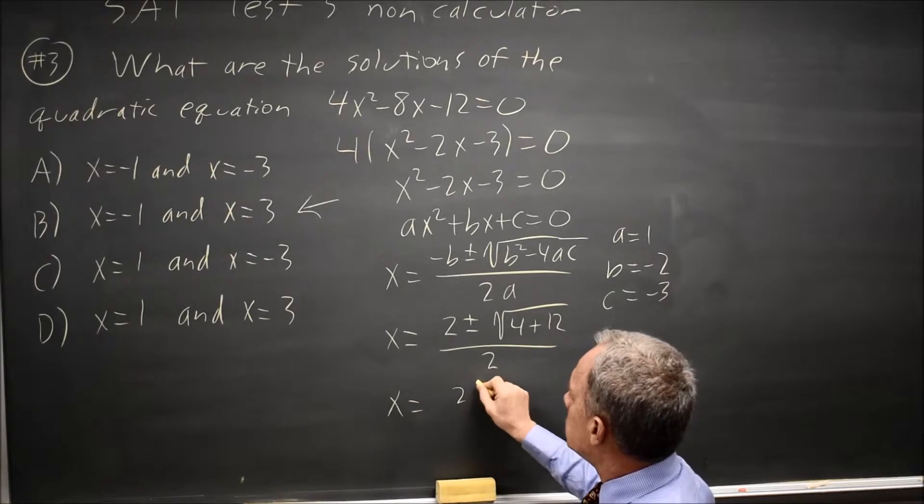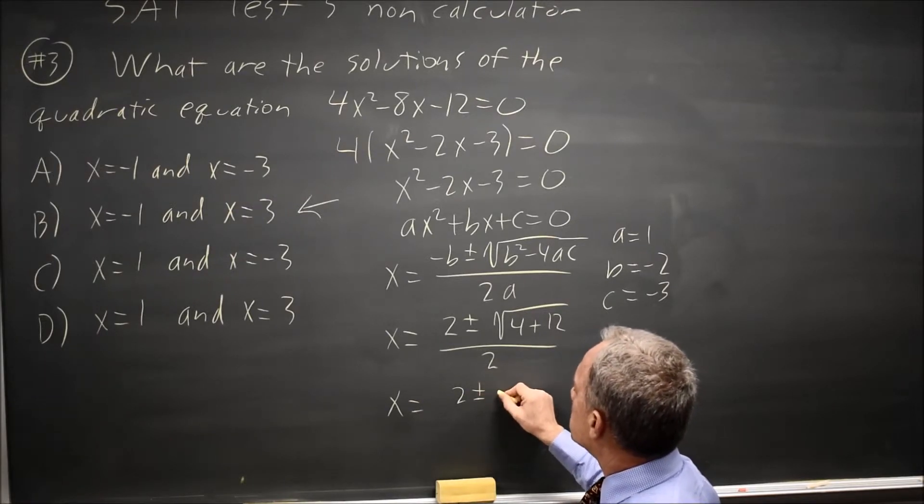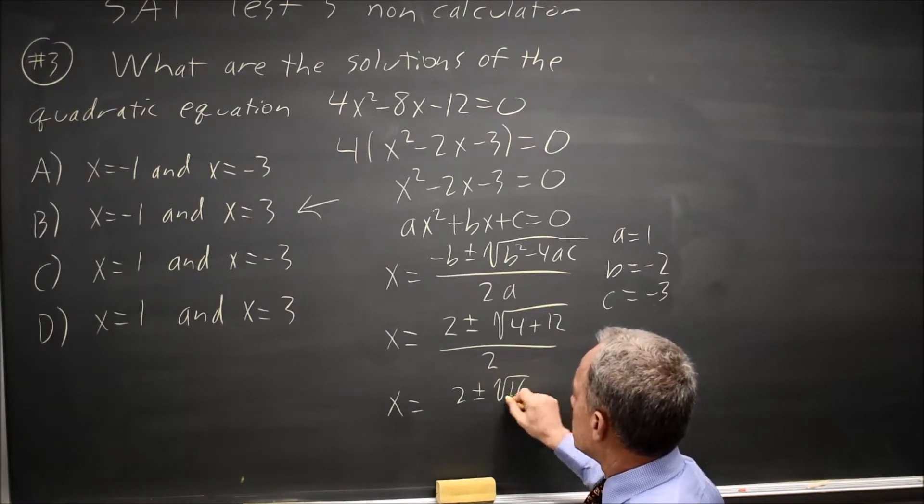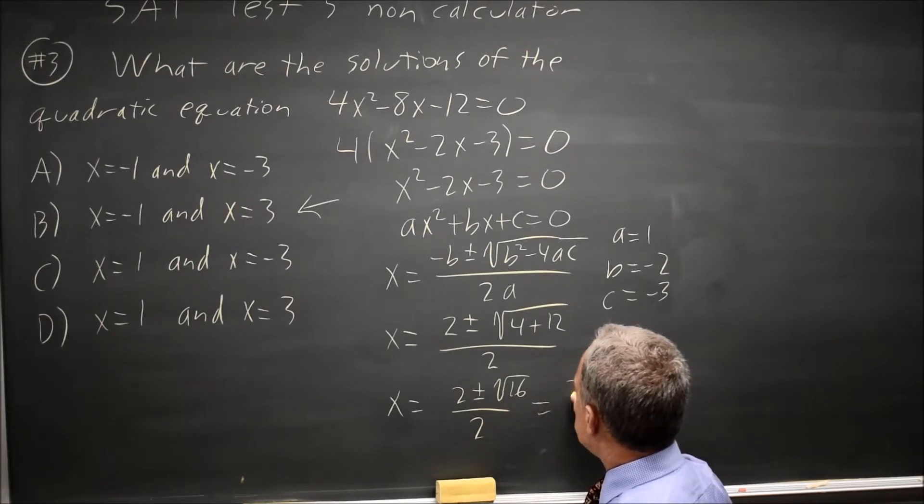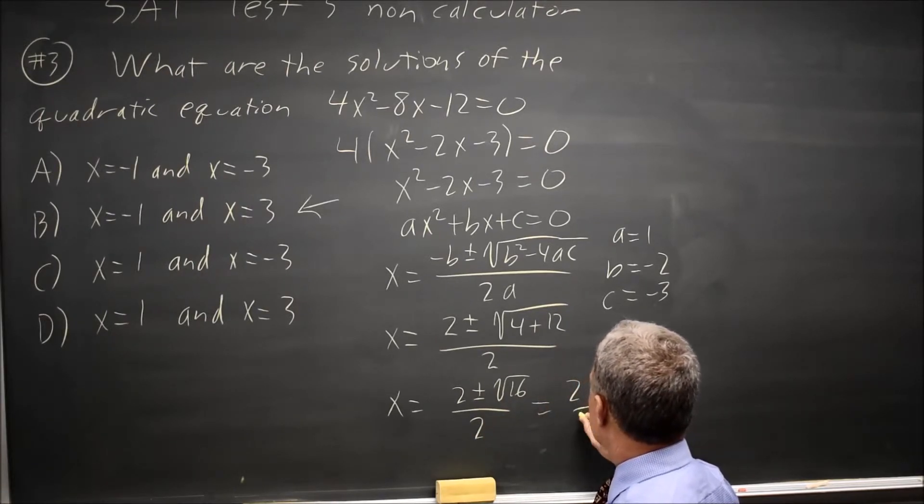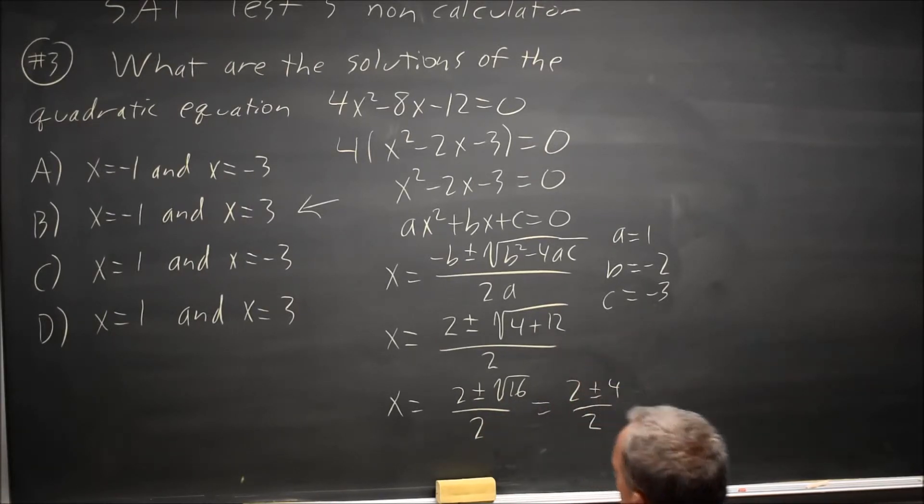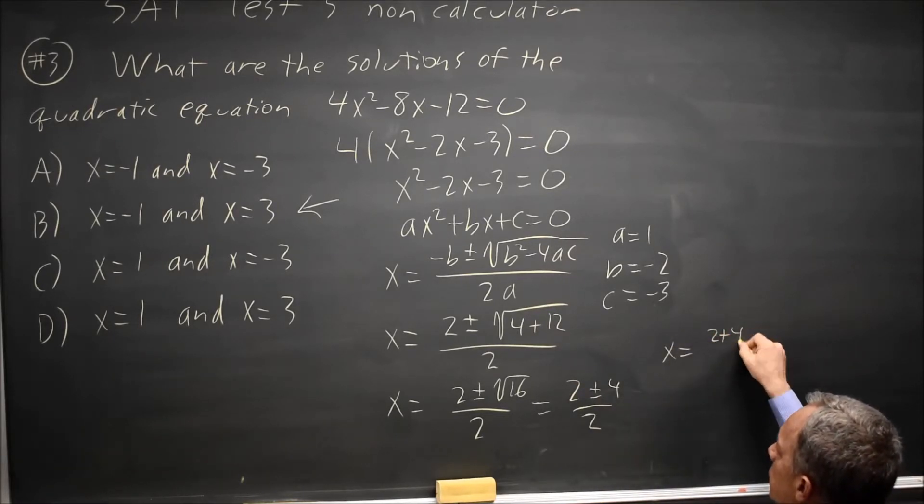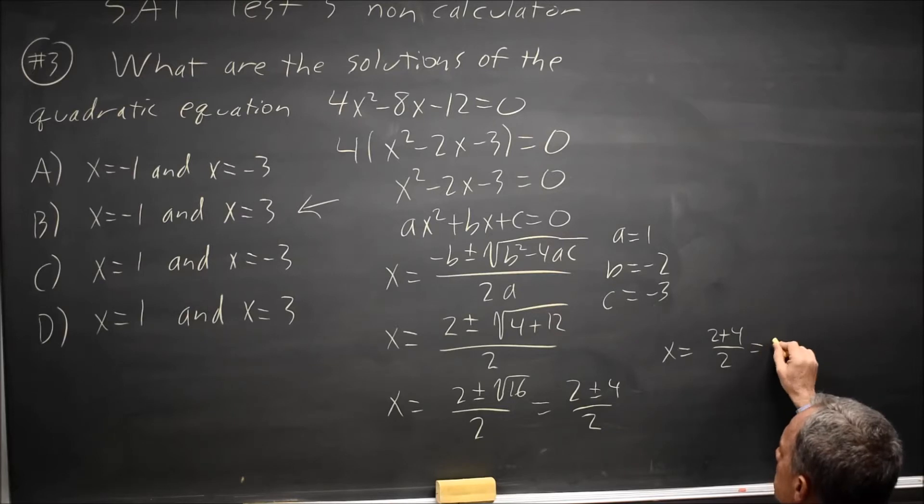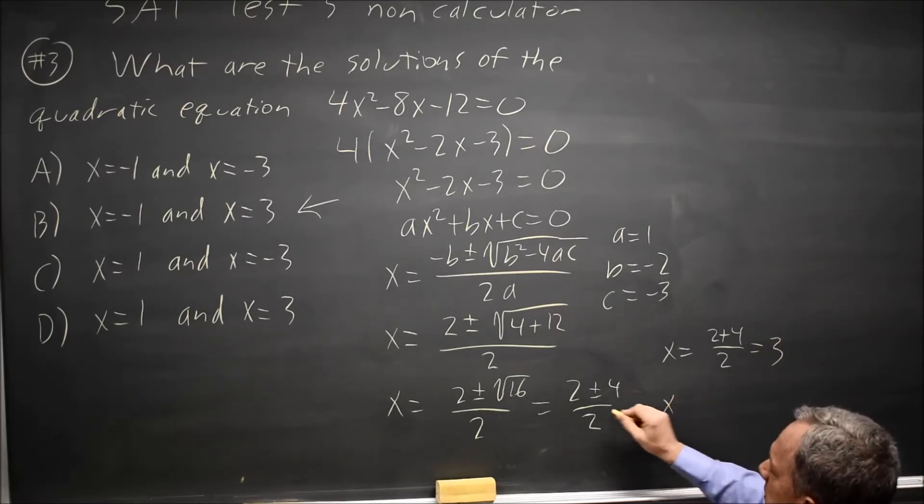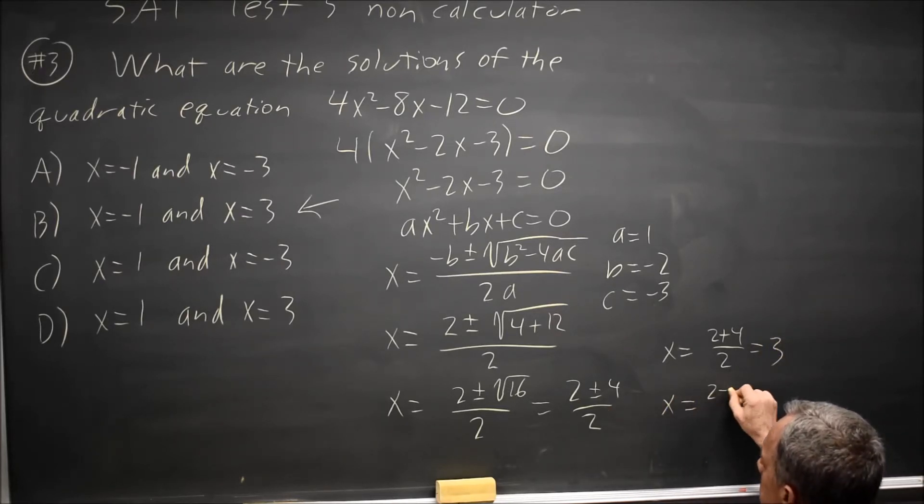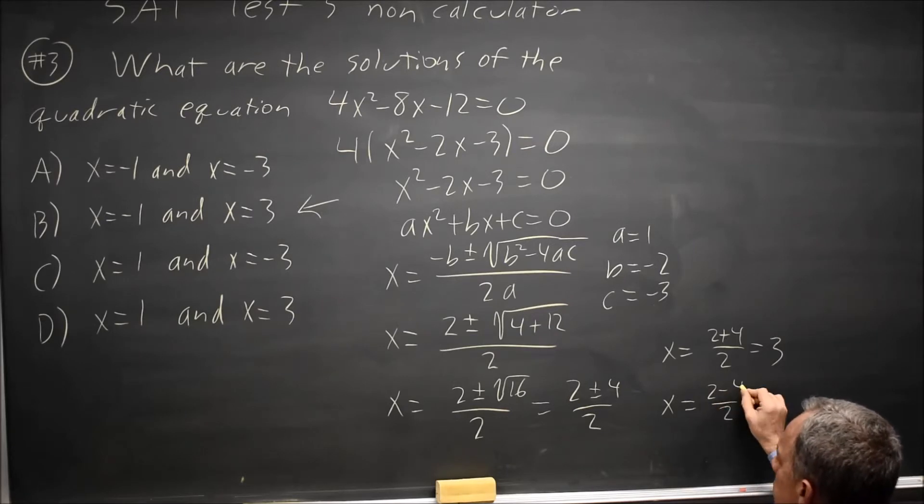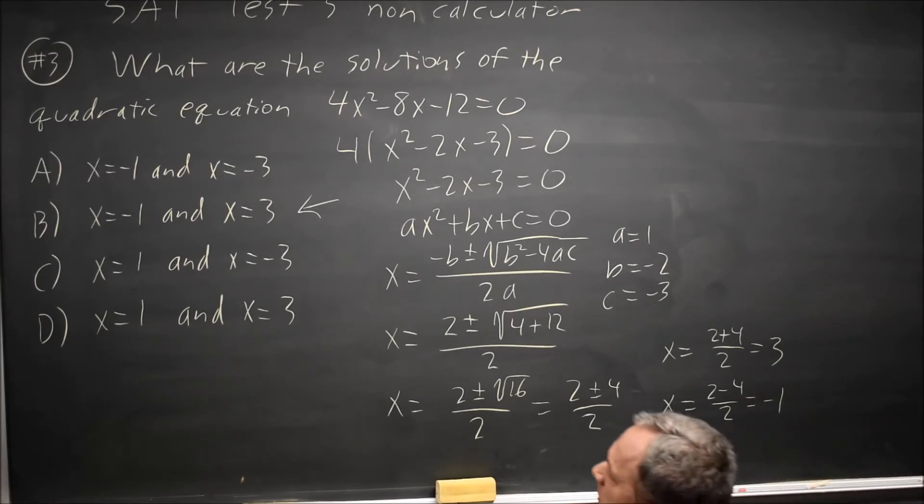So x equals 2 plus or minus the square root of 16 over 2, which is 2 plus or minus 4 over 2. With the plus 2, that's x equals 2 plus 4 over 2, which is 6 over 2 is 3. With the minus, that's x equals 2 minus 4 over 2. 2 minus 4 is negative 2. Negative 2 divided by 2 is negative 1. So that gives us 3 and negative 1, which is choice b, the same answer I found by factoring.